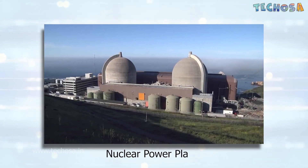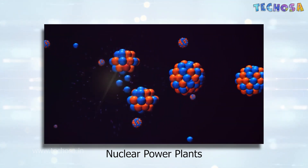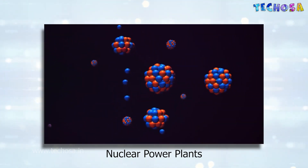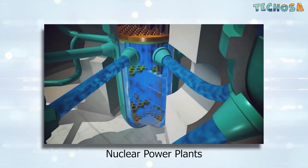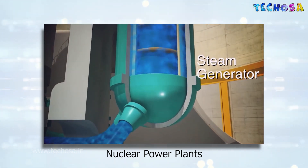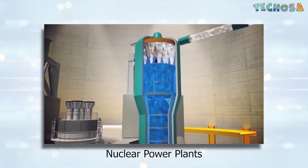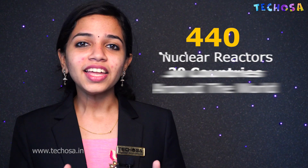Hence, nuclear fission is used to produce electricity in nuclear power plants. A nuclear power plant is a plant that makes use of nuclear energy from atoms to produce electricity. In nuclear plants, atoms are split to produce a massive amount of heat energy. This heat energy is used to boil water, which produces steam. The steam then drives turbines, which in turn drive generators that produce electricity.